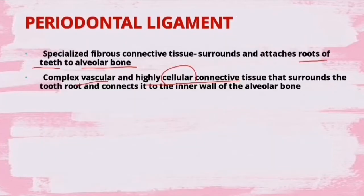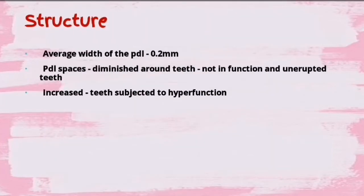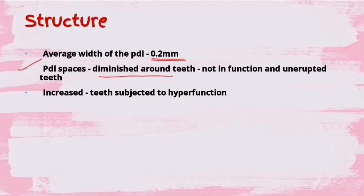The average width of your periodontal ligament is around 0.2 mm. The PDL space is diminished around teeth which are not in function or in unerupted teeth, and it is increased in teeth that are in hyperfunction. It's easy to remember: PDL space will be less in teeth not in function and will be increased in teeth in hyperfunction.